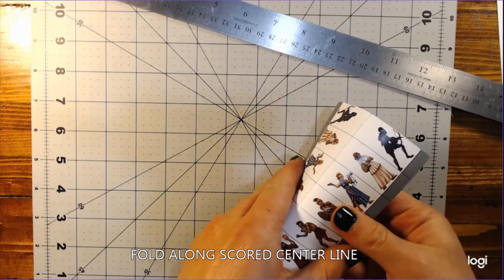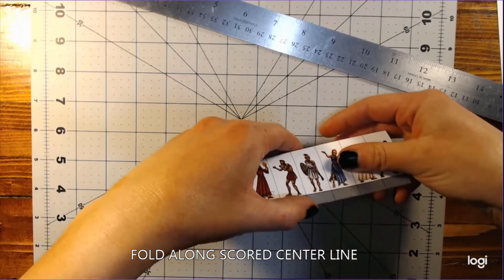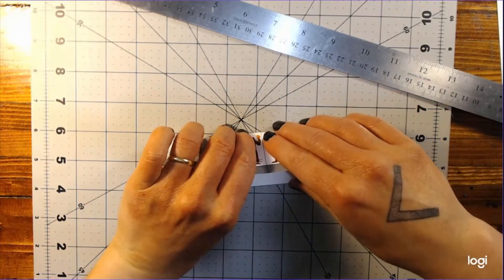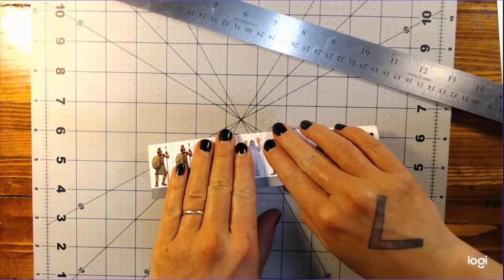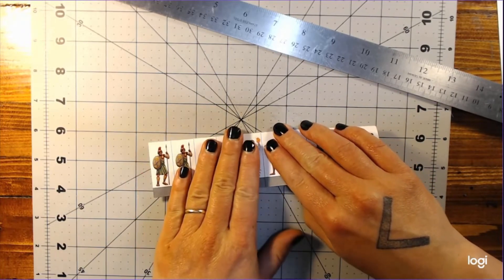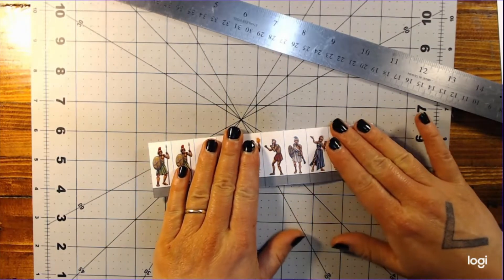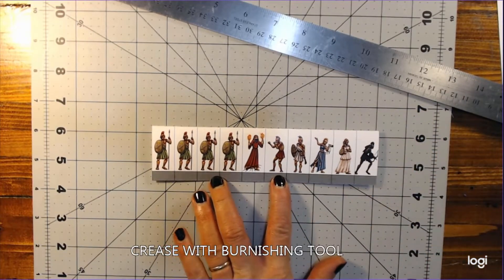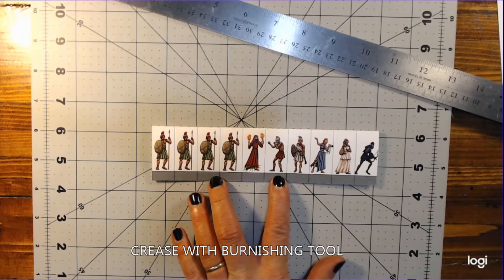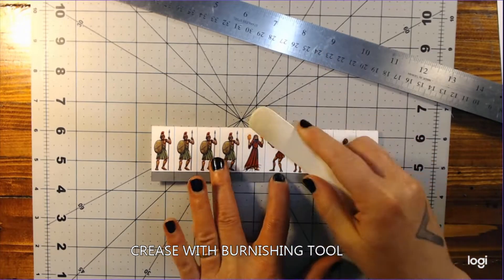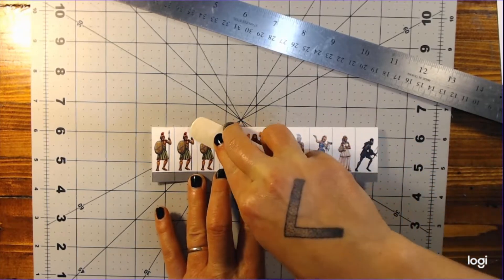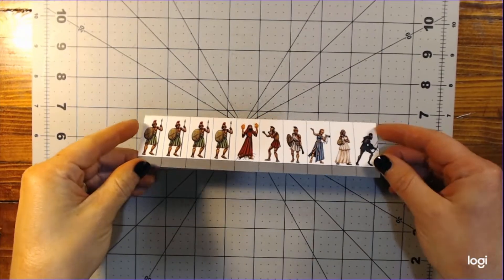Once the line is scored, you will be able to gently fold the block of miniatures along that center line. To help give the fold a nice sharp crease, use a broad burnishing tool. You can see me using a bone folder here, but the back of a wooden spoon works perfectly well too. Gently press and rub the tool along the folded edge to get it to crease and lie flat.